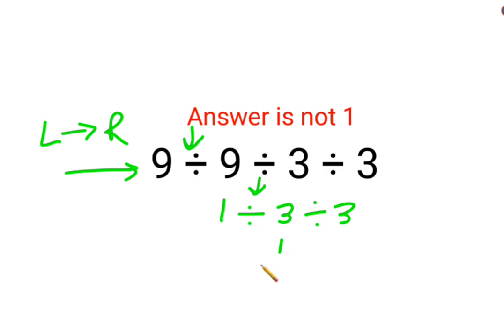The next operation is 1 upon 3 divided by 3. Now whenever there is division involved with a fraction, you will follow the acronym KCF, where K stands for keeping the first fraction as it is.